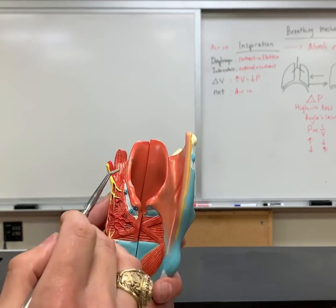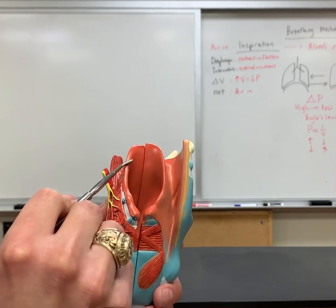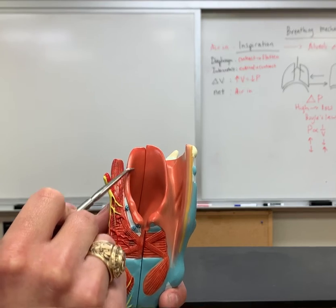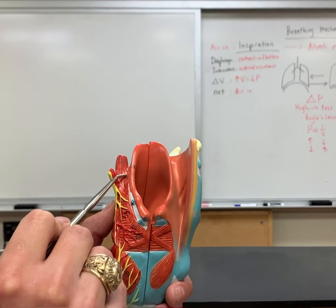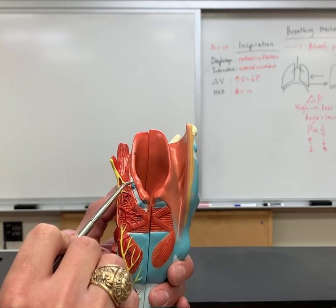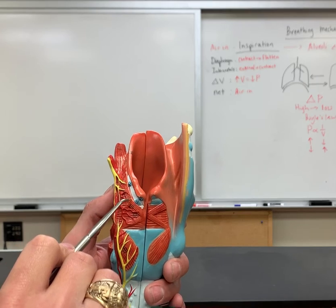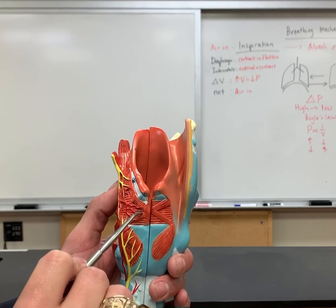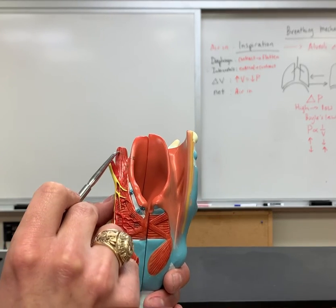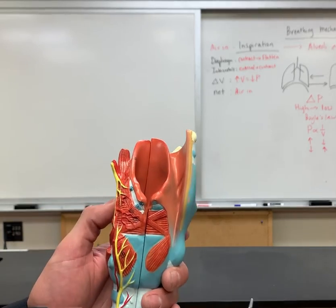Now if we look at number 20, this is the aryepiglottic fold. So that would make number 19 the aryepiglottic muscle that comes all the way down here to the arytenoid. And then number 21, this is the stylopharyngeus muscle.